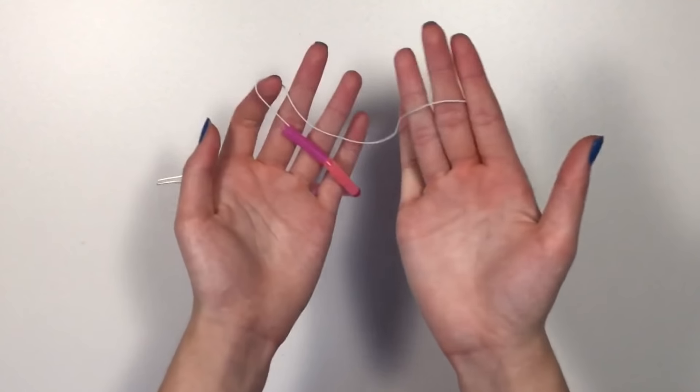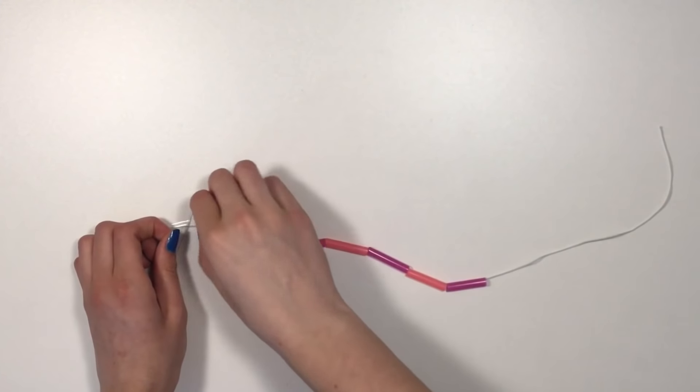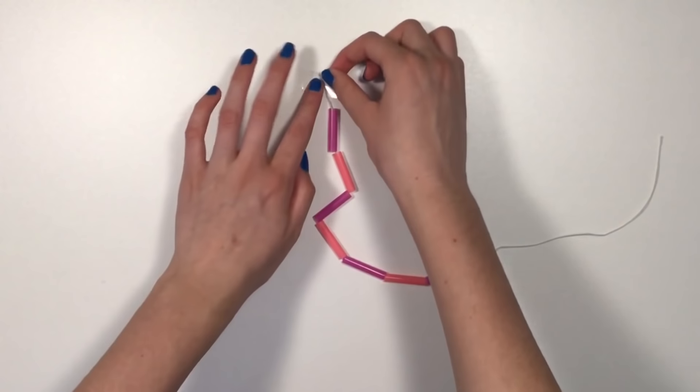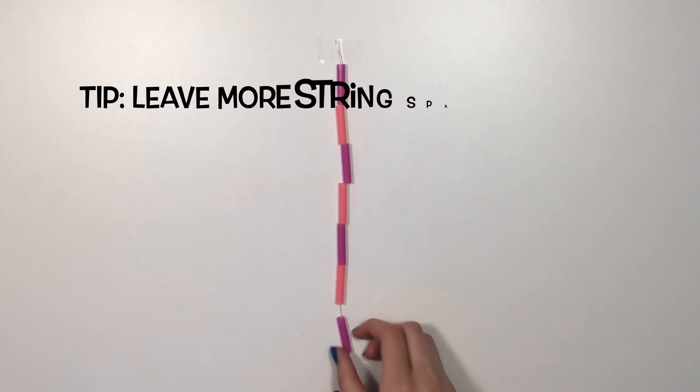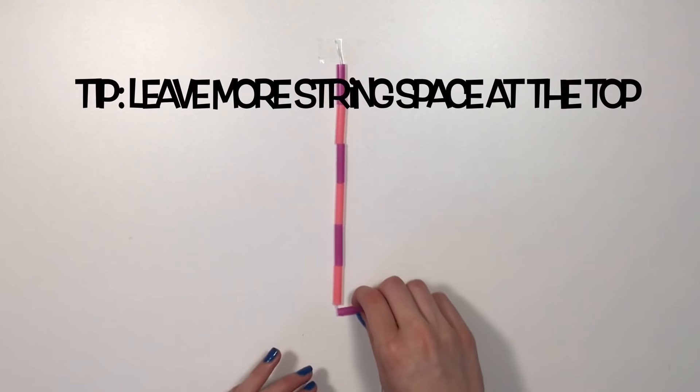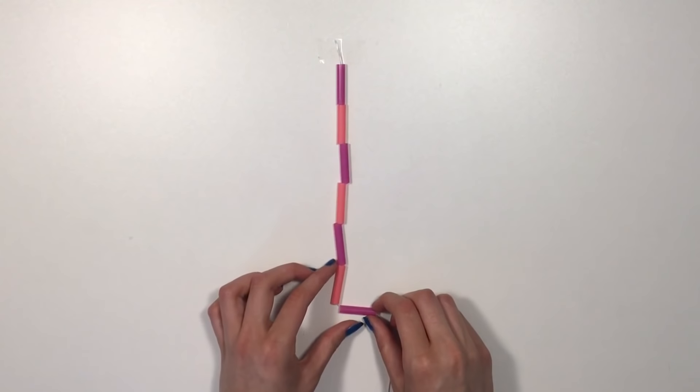Now once you've put on some of the straws onto your string, make sure you have a pretty good amount of it left. Take off the piece of tape and now put it just in front.